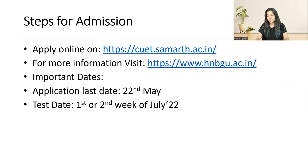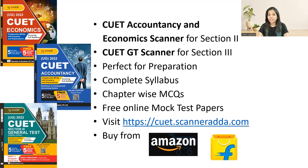You can buy CUET Accountancy and CUET Economics Scanner for Section 2, and CUET GT Scanner for Section 3. These books are perfect for your preparation because they have 100% syllabus completion and chapter-wise MCQs. You also get free online mock test papers. Visit cuet.scanneradda.com or buy these books from Amazon or Flipkart.